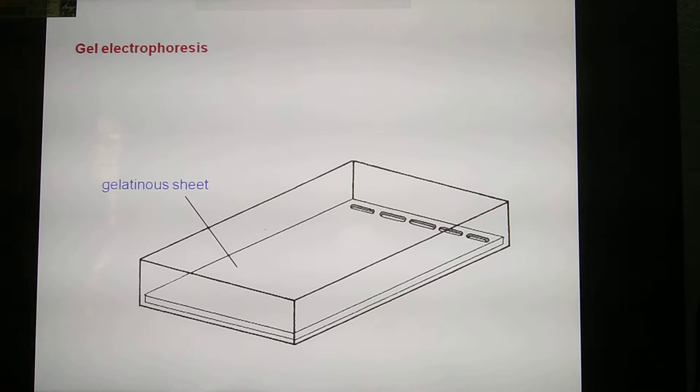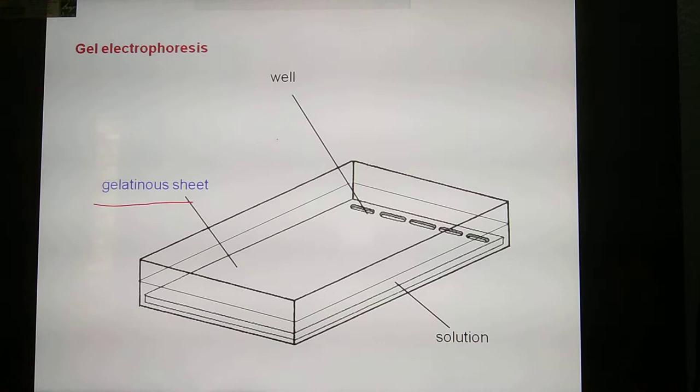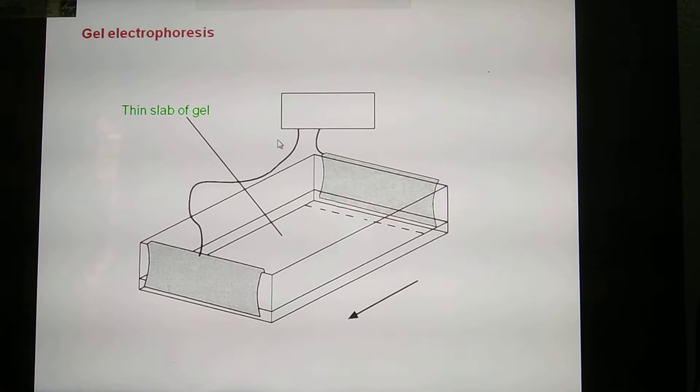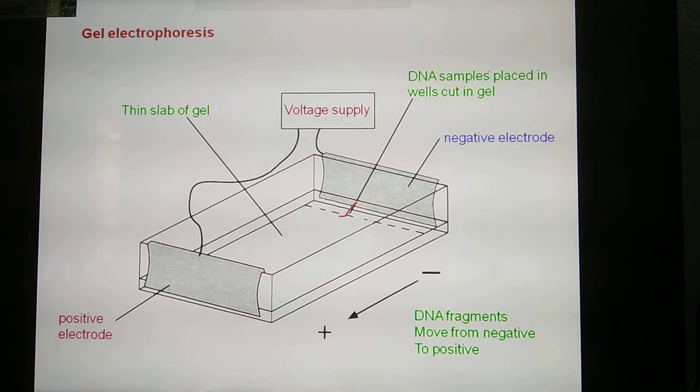Gel electrophoresis: the gel is like a plate, a box-like container. Next to the gel are the wells. Next, the solution. This is very important. In the solution, we can add DNA extract. We can add DNA extract to the wells of the gel.